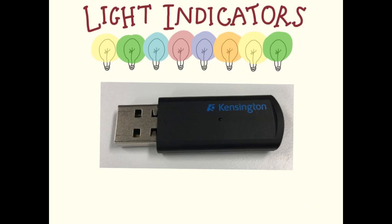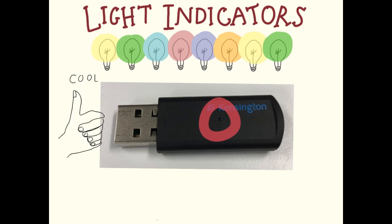The receiver has a single light indicator with two colors: green and red. For every button press while connected, the receiver LED quickly flashes green to indicate that the battery level is good. The LED will flash red on every button press if the battery level is low.